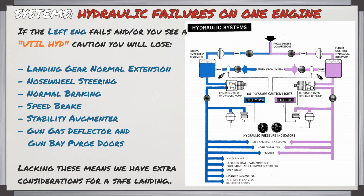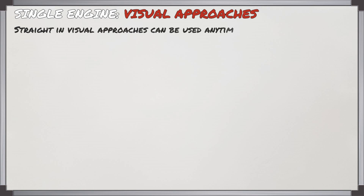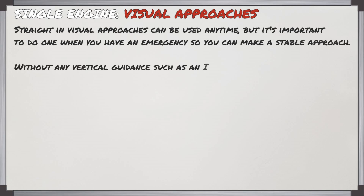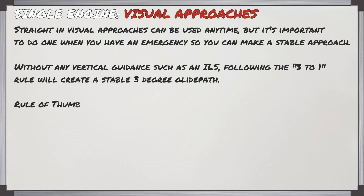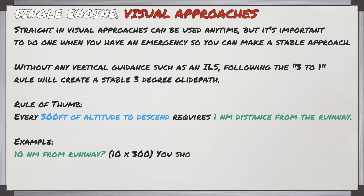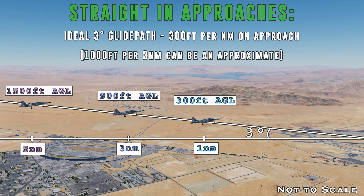We'll look at how to deal with all those other issues once we get into the airplane, but for now we'll have a quick look at making a visual approach on a single engine. You can make a straight-in visual approach anytime, but it's important to know how to do one during an emergency to ensure a stable approach. If you don't have vertical guidance such as an ILS, following the 3-to-1 rule will help create a stable 3-degree glide path all the way down to the runway. For every 300 feet of altitude you need to descend, you require 1 nautical mile distance from the runway. So if you're 10 nautical miles away, multiply 10 times 300 - by 10 nautical miles you should be at 3,000 feet above the ground. I've made a picture here as a reference.